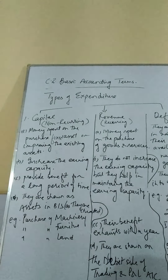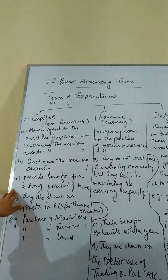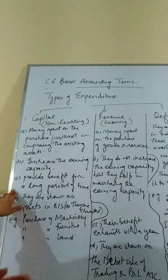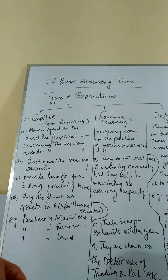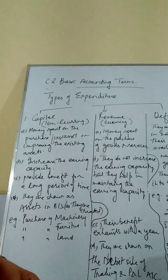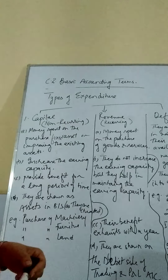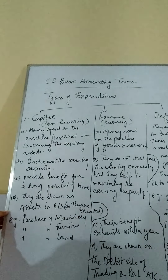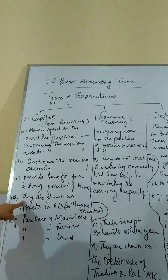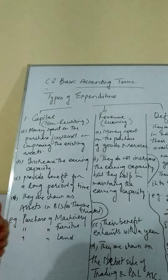The third feature is that capital expenditures provide benefit for a longer period of time — generally more than one year. These expenditures provide benefit to the business firm not for a short period but for a large number of years. For example, if you purchase a building, it will not collapse in one month or one year — it will last for around 10 to 20 years. So they provide benefit for a longer period of time.